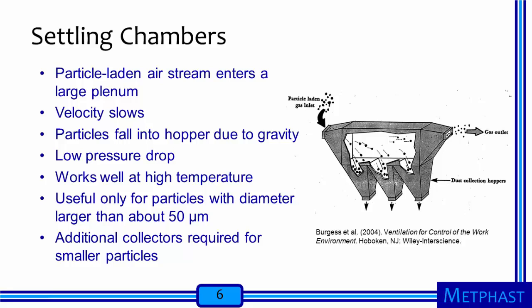In a settling chamber, a particle-laden airstream enters a larger plenum and slows down because the cross-sectional area is so large. Velocity equals the air flow rate divided by the cross-sectional area, so if the area increases, the velocity must slow down. As the velocity slows, particles have a better opportunity to fall out of the air due to gravity and are collected in a hopper. They have low pressure drop and can be used with high-temperature airstreams. However, settling chambers are generally useful only for particles with diameters larger than about 50 micrometers, and therefore are not effective for nanoparticles.